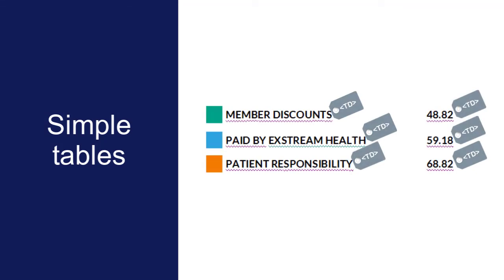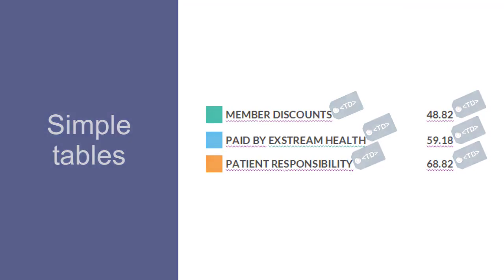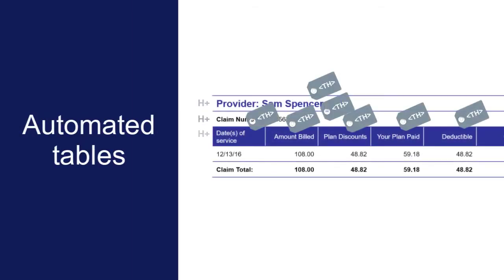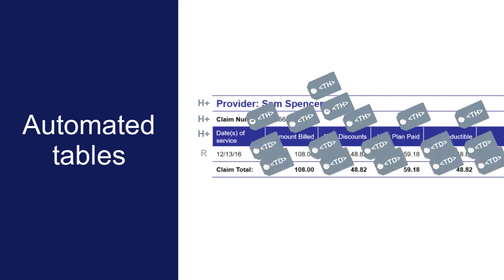In simple tables, all cells are tagged as table data cells. In automated tables, cells within header rows and columns are automatically tagged as table header cells. Table cells within all other row and column types are tagged as table data cells.